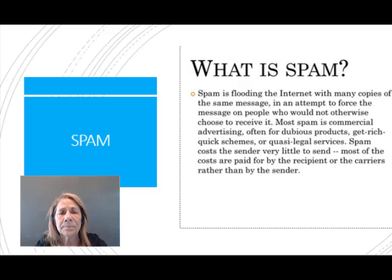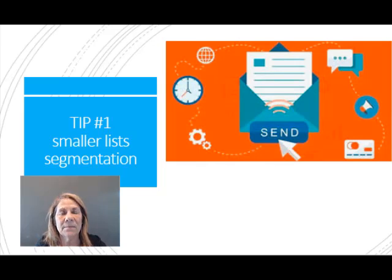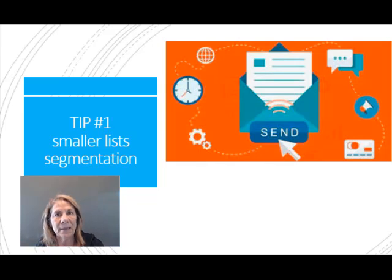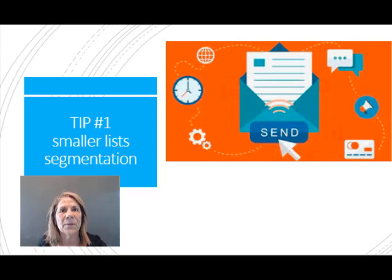These are three tips to help with that. One is you want to send smaller lists. If you have, let's say, 10,000 people on your email list, instead of sending the same email to all 10,000 at the same time, you could break it up and send it in segmented lists — maybe 500 at a time or a thousand at a time at different times throughout the day. Everybody gets the same email, just not all at once.